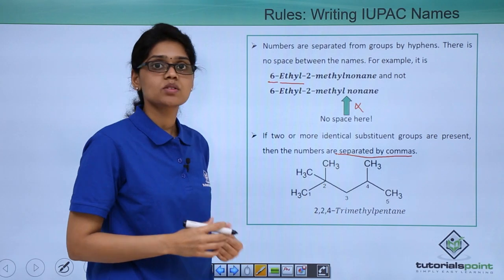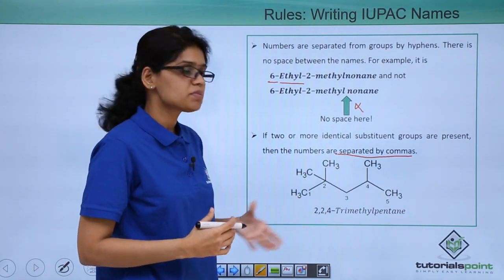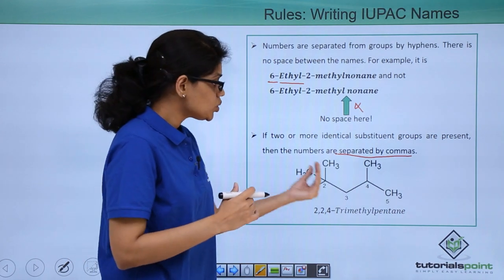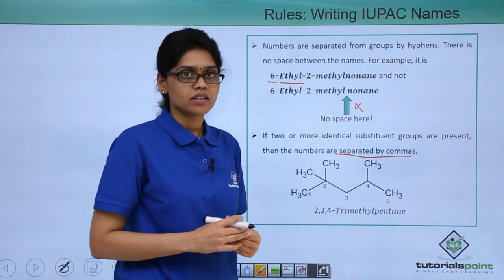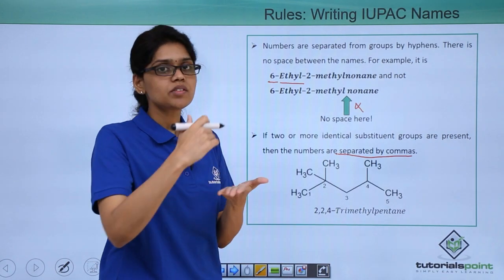Based on that the identical substituents are actually separated by using commas. So here the name of this particular compound would be 2,2,4-trimethylpentane. Why? Because there are 3 methyl groups and they are at 2, 2 and 4th position.